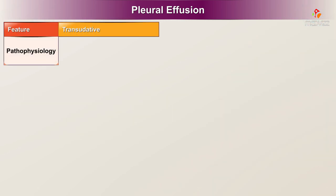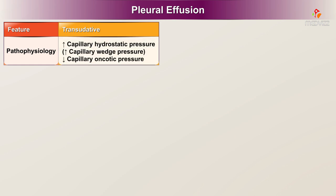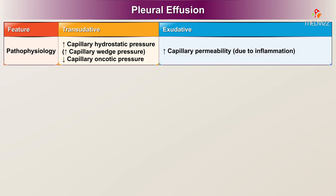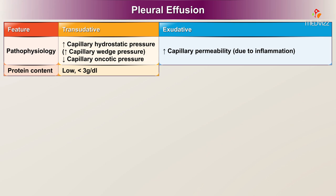The pathophysiology of a transudate involves increased capillary hydrostatic pressure, that is increased capillary wedge pressure, and decreased capillary oncotic pressure. Exudate involves increased capillary permeability, for example due to inflammation. Protein content in a transudate is low, less than 3 grams per deciliter, and in an exudate it is high, more than 3 grams per deciliter.